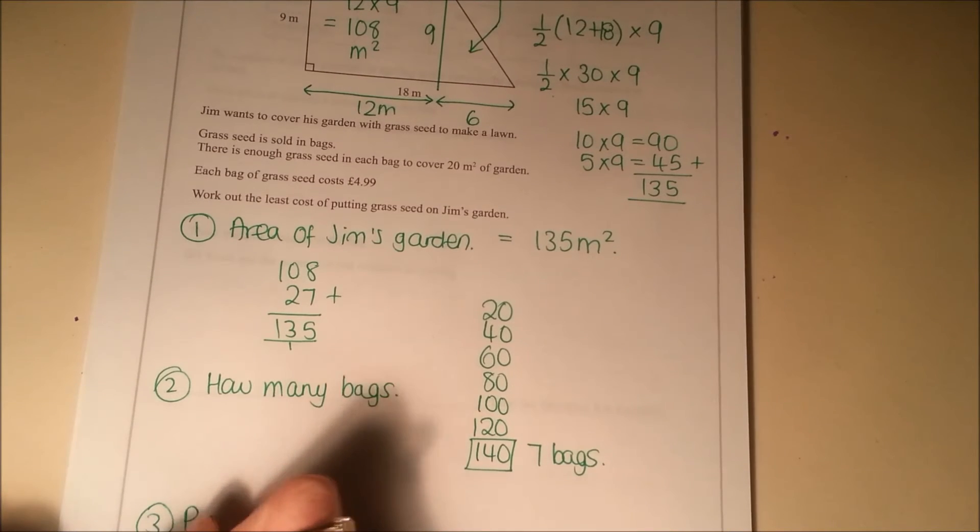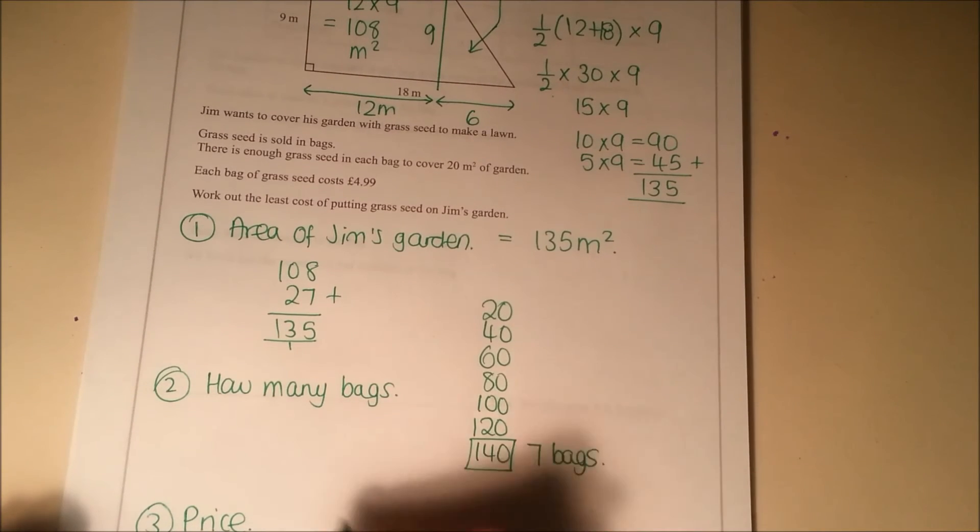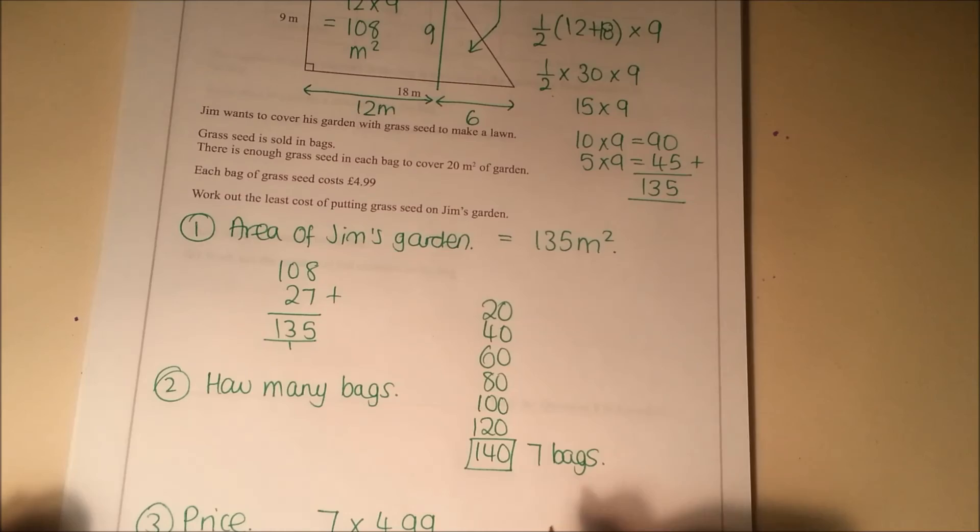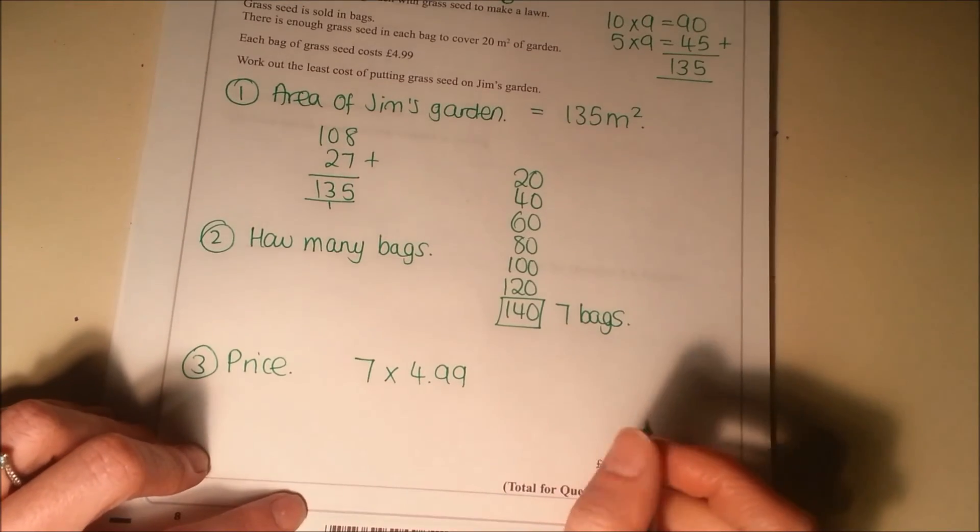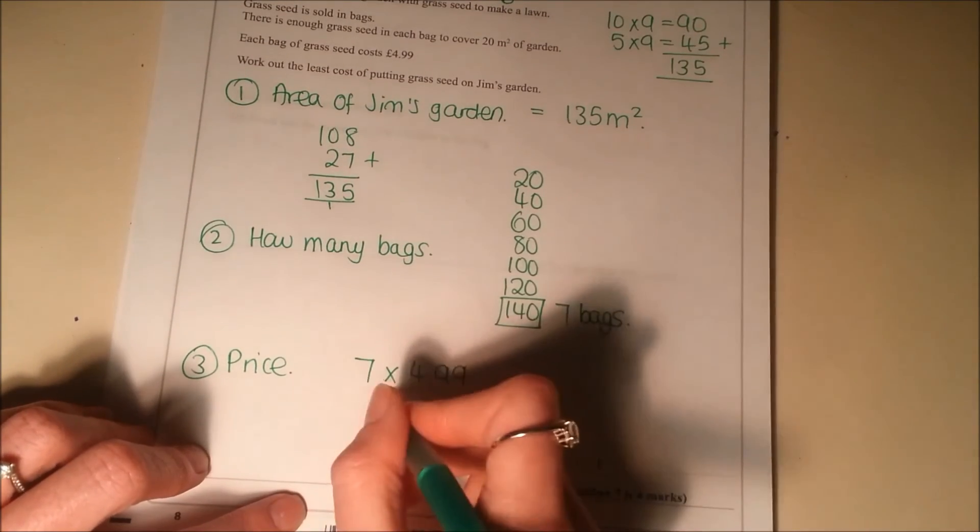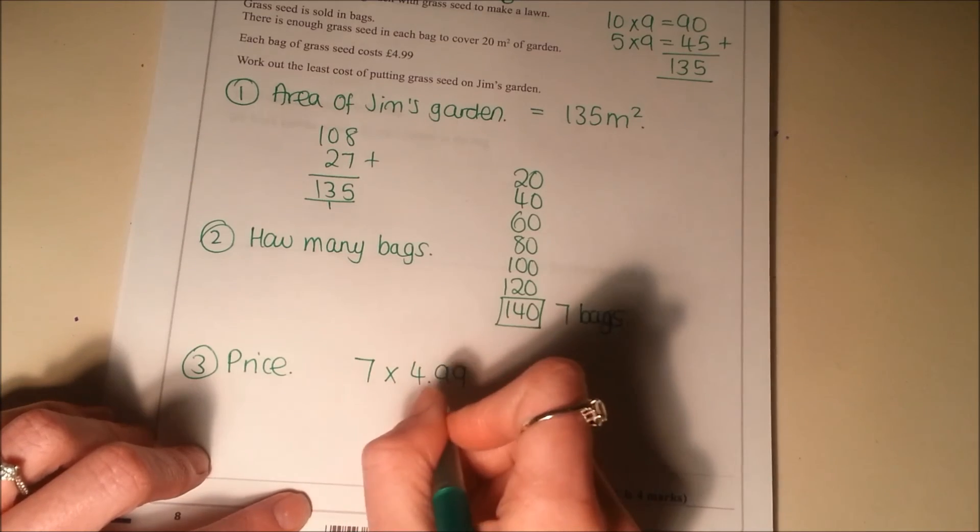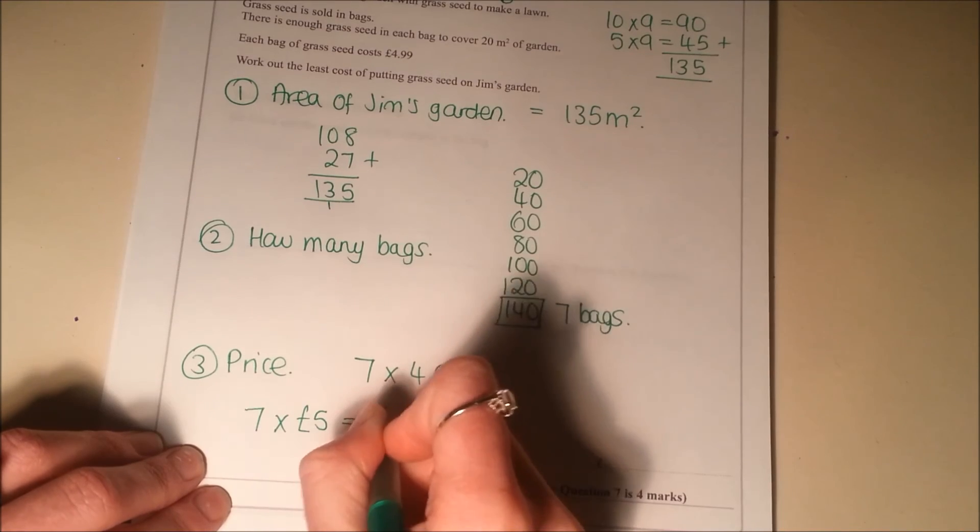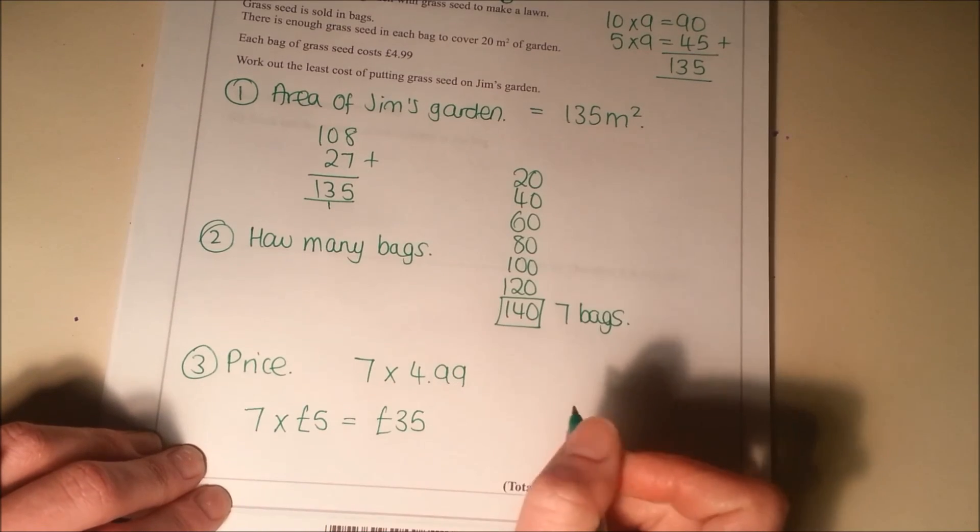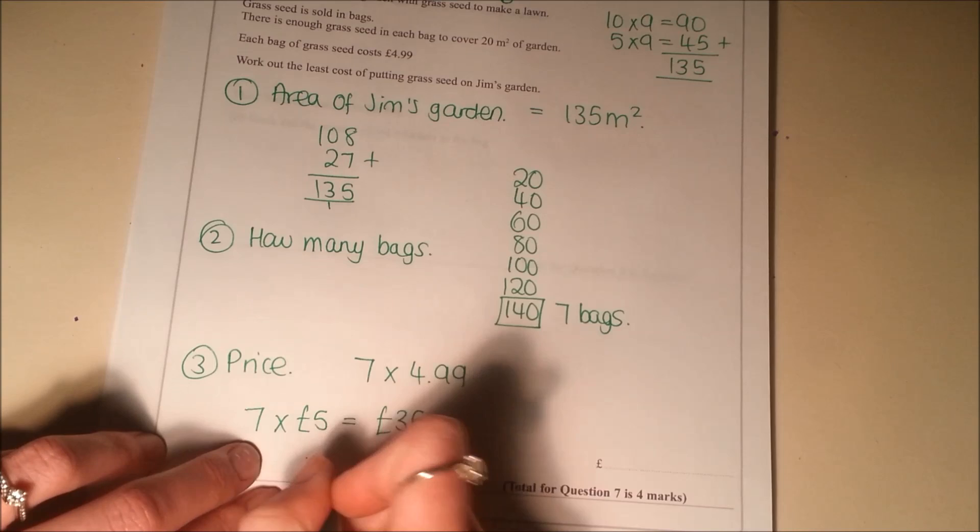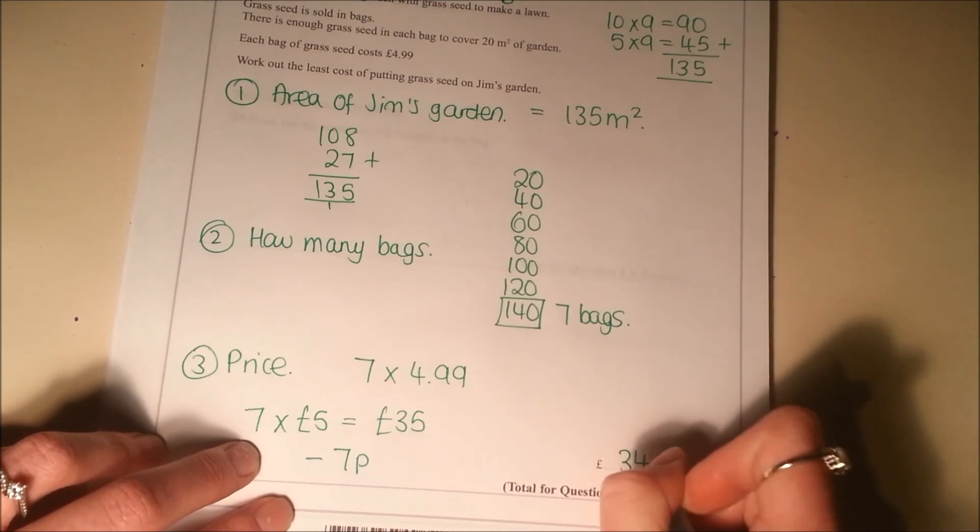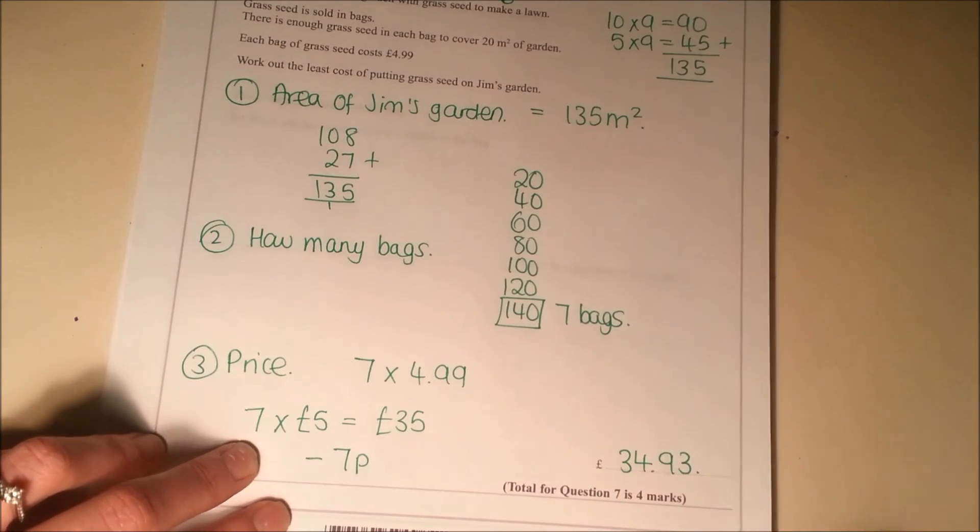So then we need to work out the price. So it's seven bags and they cost £4.99 each. So you need to work out seven times £4.99, quite difficult to do without a calculator. Easiest way of doing this I think is to round it. So we'll do seven lots of five pounds. So if the bags cost five pounds each, it would be 35 pounds. And then just subtract seven pence off that. So that then gives you 34 pounds and 93 pence.